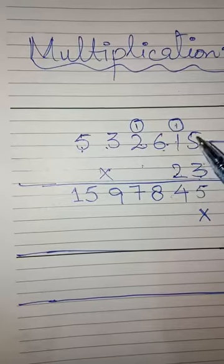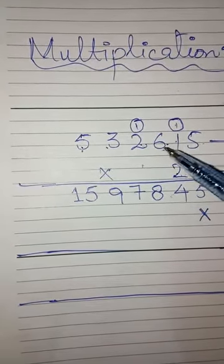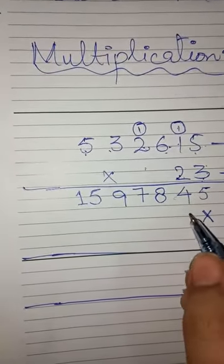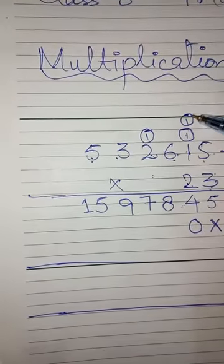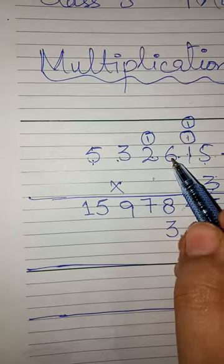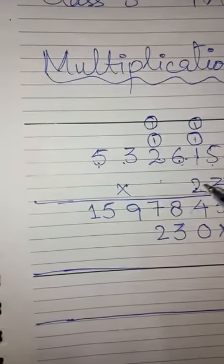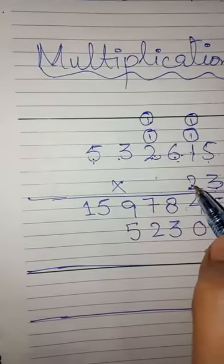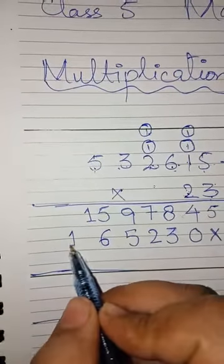Next, it's 2's turn. Now 2 has to multiply with all digits one by one. Again, we will multiply from right to left. 2 fives are 10. 0 is here, 1 is carry. 2 ones are 2 plus 1 is 3. 2 sixes are 12. 2 is here, 1 is carry. 2 twos are 4 plus 1 is 5. 2 threes are 6 and 2 fives are 10.